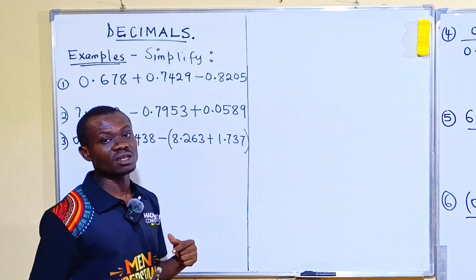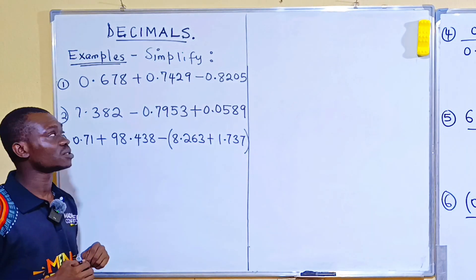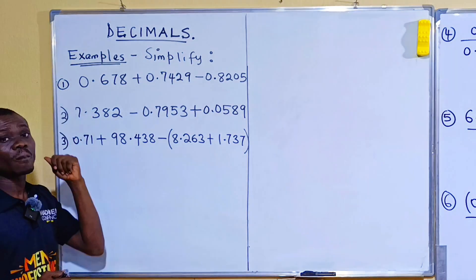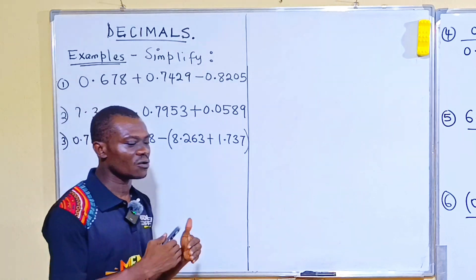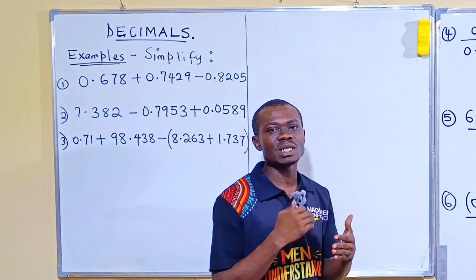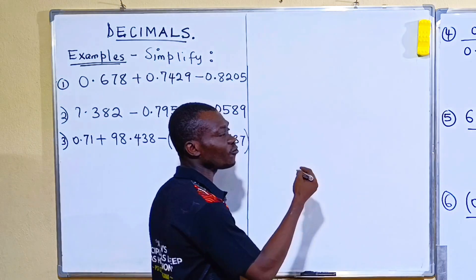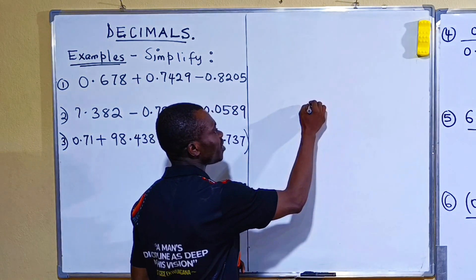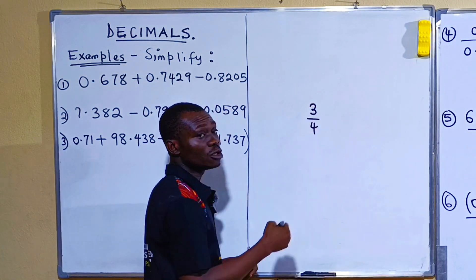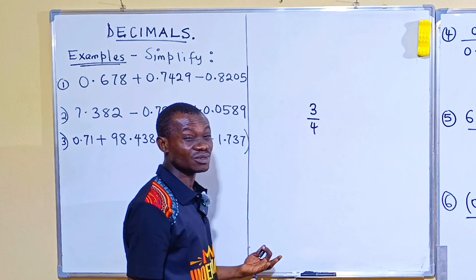So we've seen fractions, and here is decimals. When it comes to decimals, there are a number of things that you're expected to know. One of them is how to convert fractions to decimals. For instance, one can say: change 3 over 4 to a decimal. So it's a very simple thing to do.